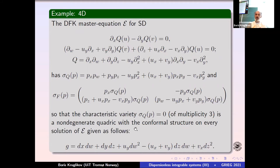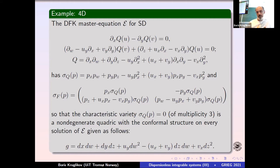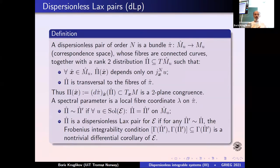The only thing we need is non-degeneracy. Now I'd like to say what a dispersional Lax pair is. I already said it before, but now we've discussed correspondence space, so I'd like to revisit it most abstractly. A dispersional Lax pair of order N is, first of all, a bundle — the correspondence space M̂ over M — where M is equipped with a solution U. It's a Lax pair for an equation, and U is a solution to the equation. Of course I don't need to solve the equation; I just need to find a jet of U. It's a purely algebraic story.